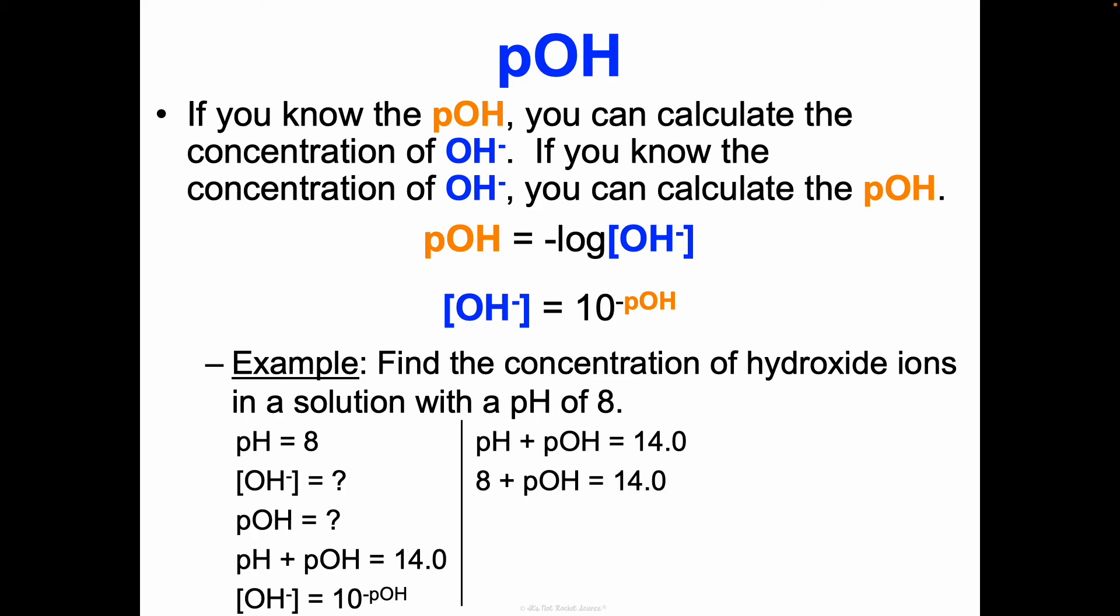Plug in your pH. 8 plus pOH equals 14.0. I need to subtract 8 from both sides, and I get a pOH of 6. Now I can use this to find the hydroxide ion concentration. Hydroxide ion concentration equals 10^-pOH. I can plug in the 6 there that we calculated. If I plug in my calculator 10^-6, you should get a hydroxide ion concentration of 1.0 times 10^-6 molar.